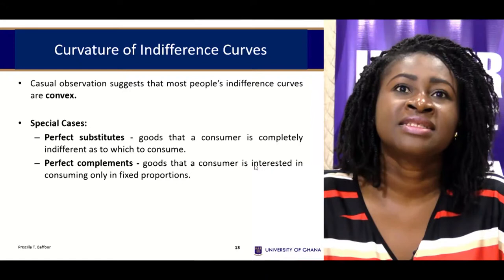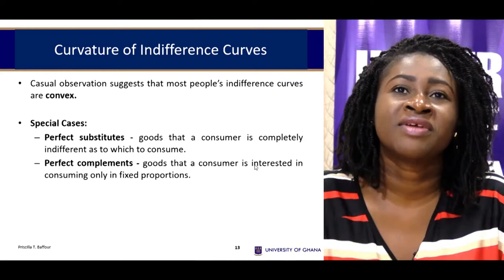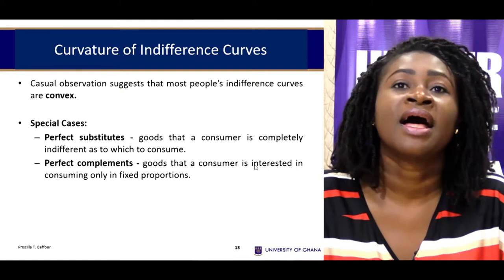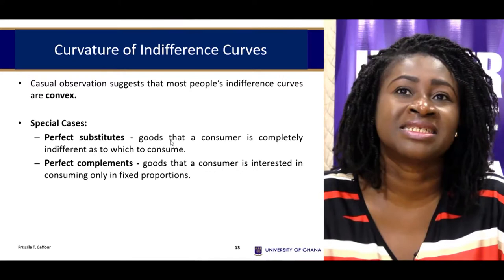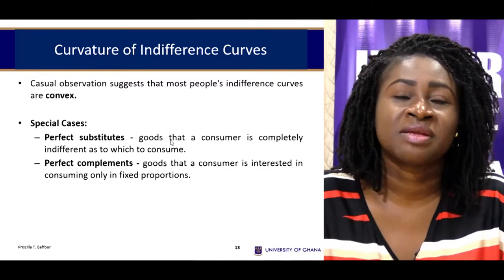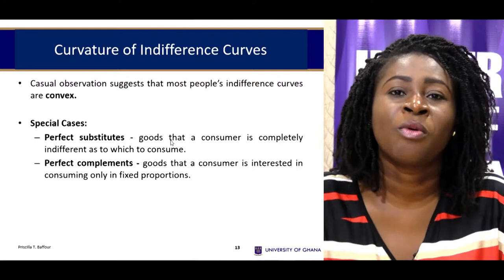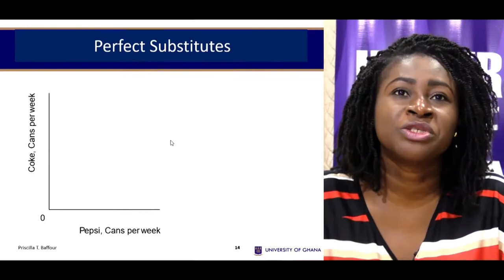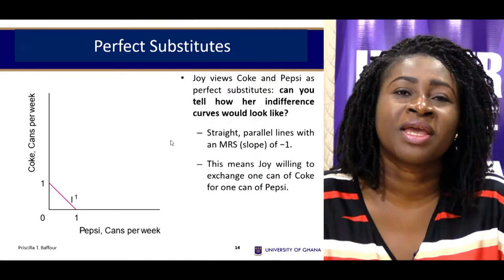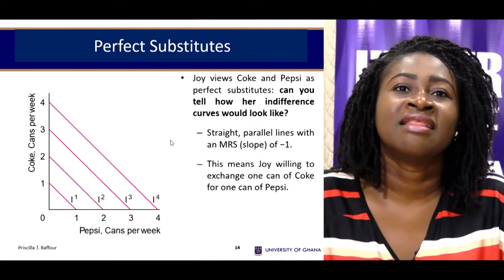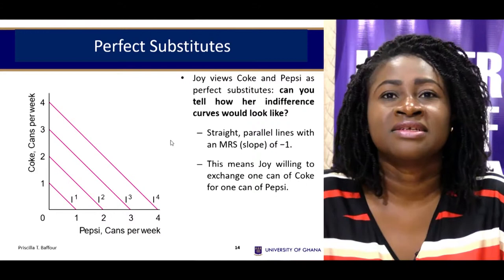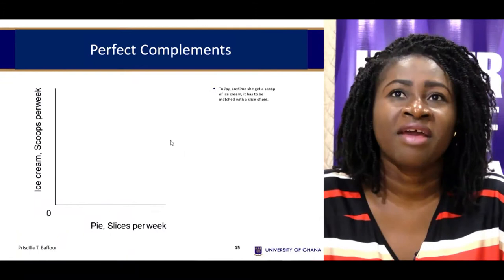In terms of curvature, there are scenarios where indifference curves may not take the typical convex shape. One scenario is perfect substitutes — goods that serve the same purpose but are different, such as Coke and Pepsi. Because you cannot tell the difference between them when mixed, the consumer would always pick one and not combine them. The rate of substitution is constant at one, giving a perfectly straight-line indifference curve, where higher curves yield higher satisfaction.